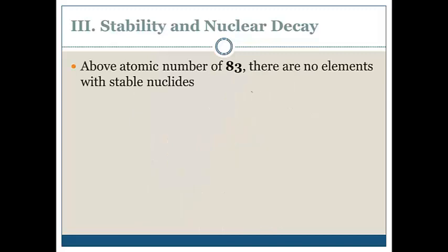Above atomic number 83, there are no stable elements. Number 83 is bismuth. So, anything with a larger atomic number than bismuth does not have any stable nuclides. In other words, it's a radioactive element.